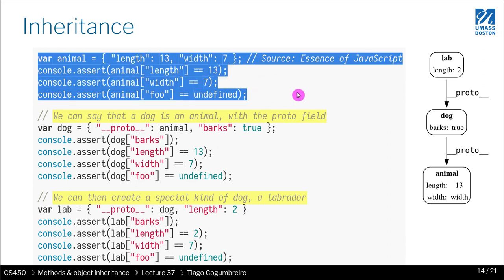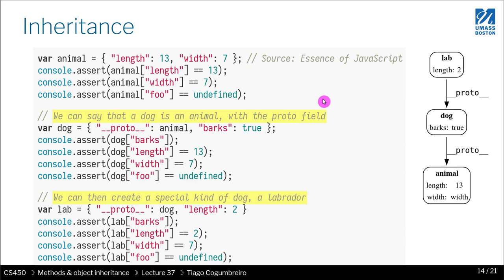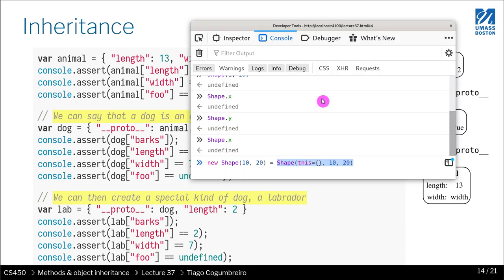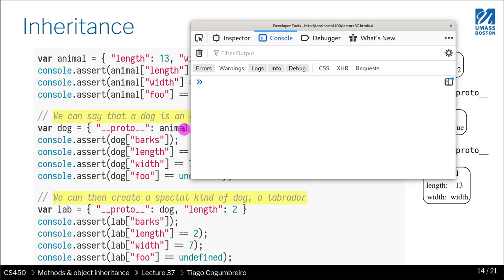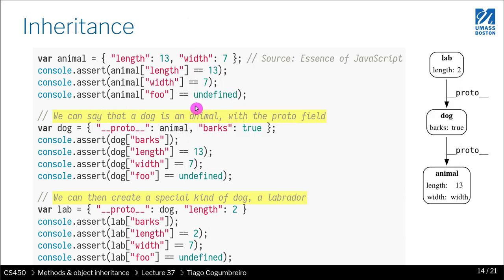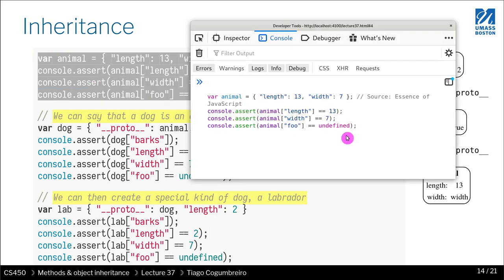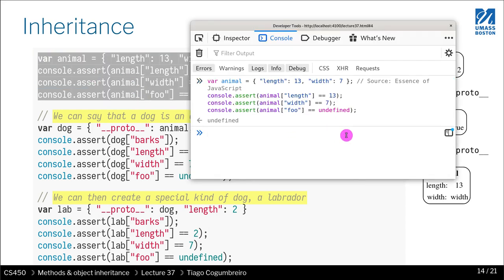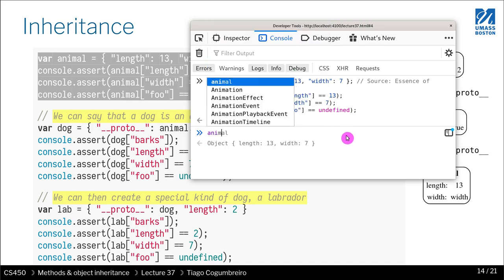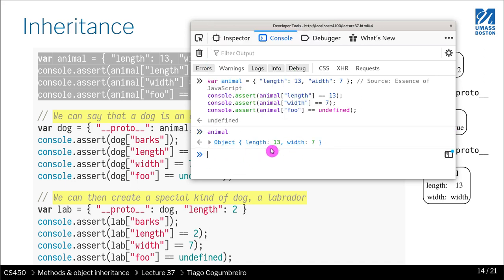For instance, in my browser, I can always access the interpreter by doing Ctrl Shift I, that brings up this very nice window. I can clear it by pressing here. And then I can copy paste the examples, for instance, like so. And do animal. You can see the animal is defined, and it has a length and a width.